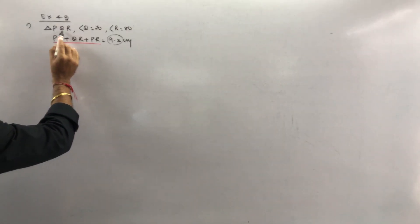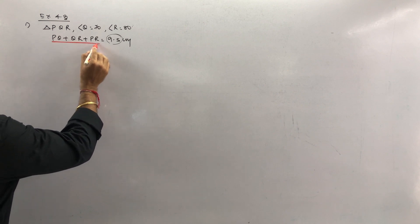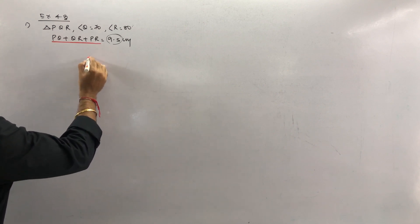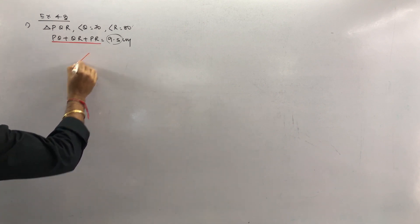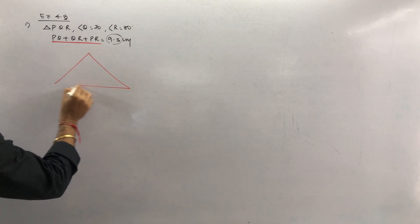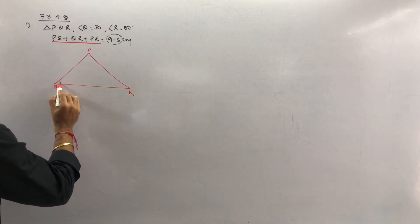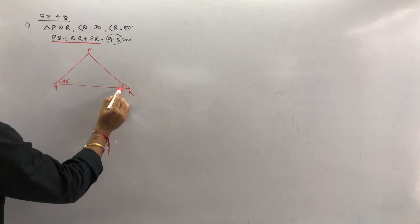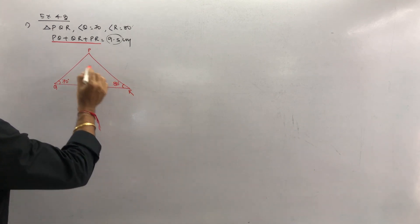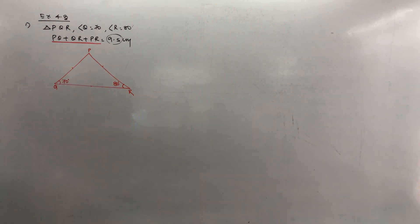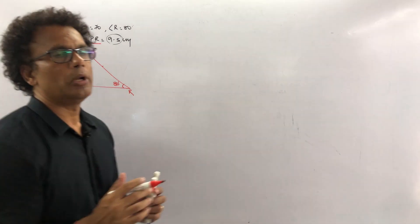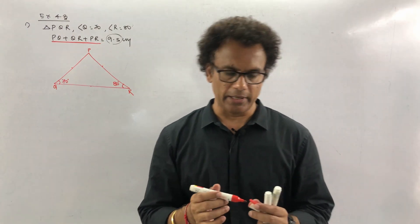The first sum: you have to draw triangle PQR, where angle Q is equal to 70 degrees, angle R is equal to 80 degrees, and PQ plus QR plus PR — that is the perimeter — is equal to 9.5 cm. I will draw a rough figure. This is triangle PQR where angle Q equals 70°, angle R equals 80°, and the sum of all three sides equals 9.5.